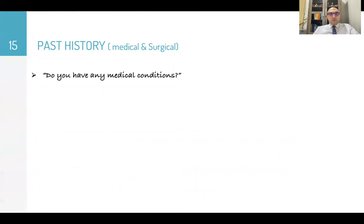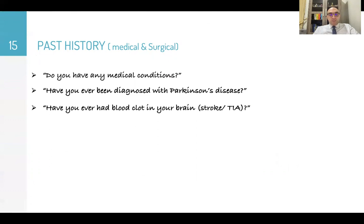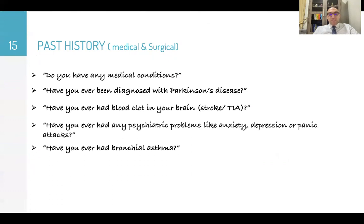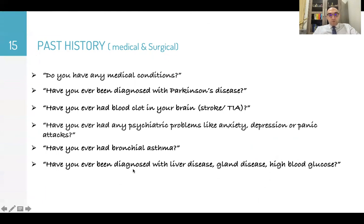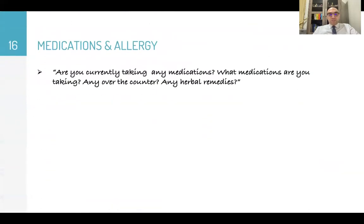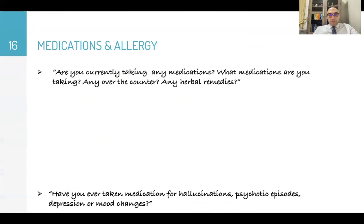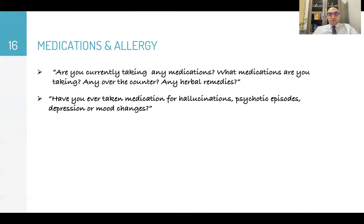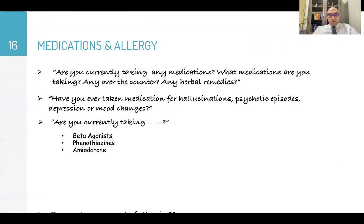After the present history, go to past history: 'Do you have any medical conditions? Have you been diagnosed with Parkinson's disease? Have you ever had a blood clot in the brain? Any psychiatric problems like anxiety, depression, or panic attacks? Have you had bronchial asthma, liver disease, gland disease, or high blood glucose?' For medications and allergies: 'Are you currently taking any medications — including over-the-counter or herbal remedies? Have you ever taken medication for hallucinations, psychotic episodes, depression, or mood changes? Are you currently taking beta agonists for bronchial asthma, phenothiazines, or antiarrhythmics like amiodarone? Do you have any allergies?'